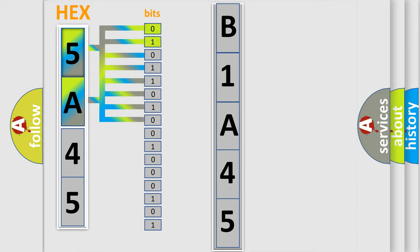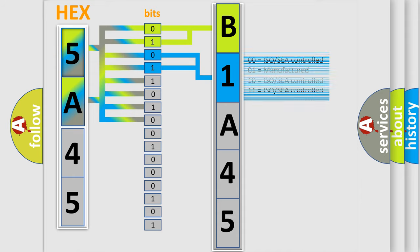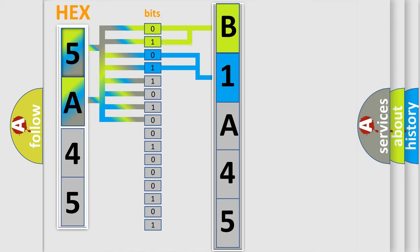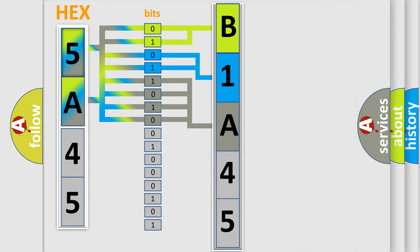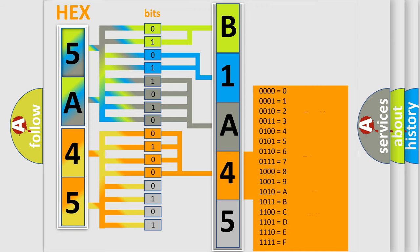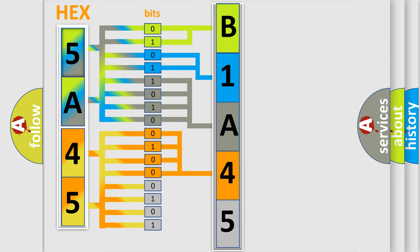By combining the first two bits, the basic character of the error code is expressed. The next two bits again determine the second character. The last bit styles of the first byte define the third character of the code. The second byte is composed of a combination of eight bits. The first four bits determine the fourth character of the code.